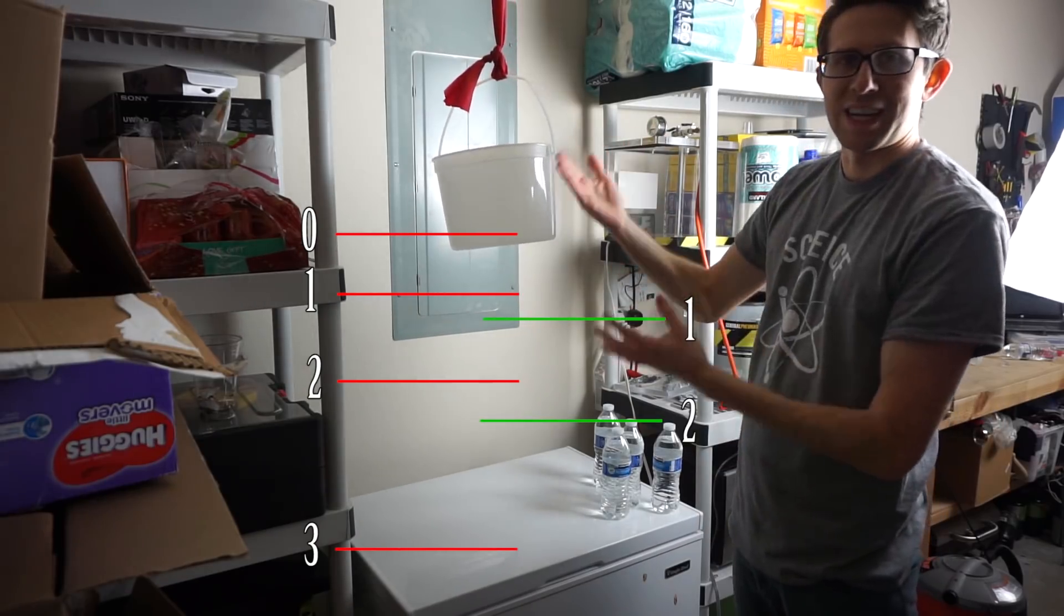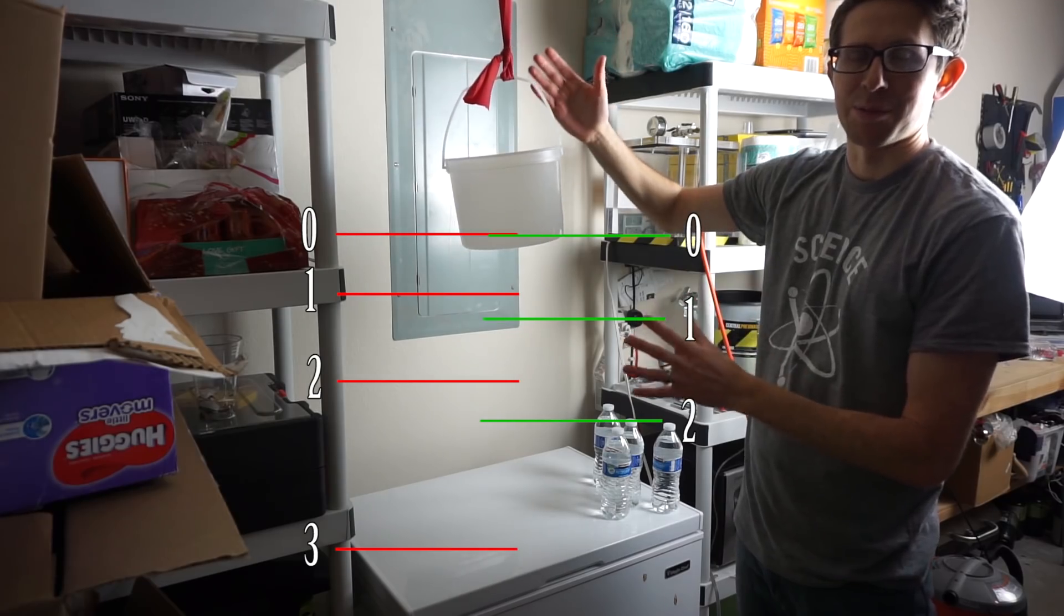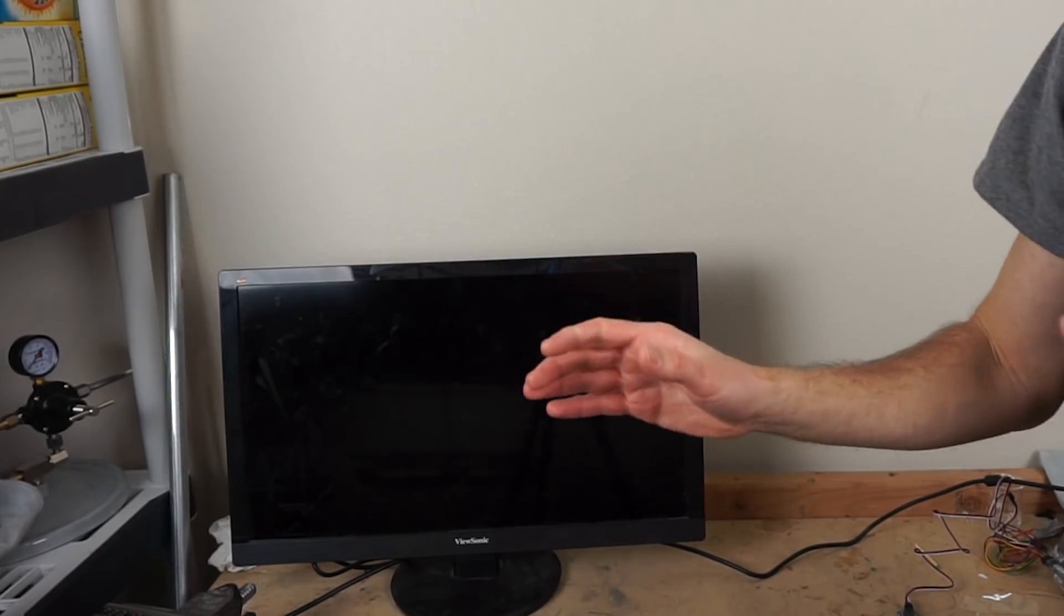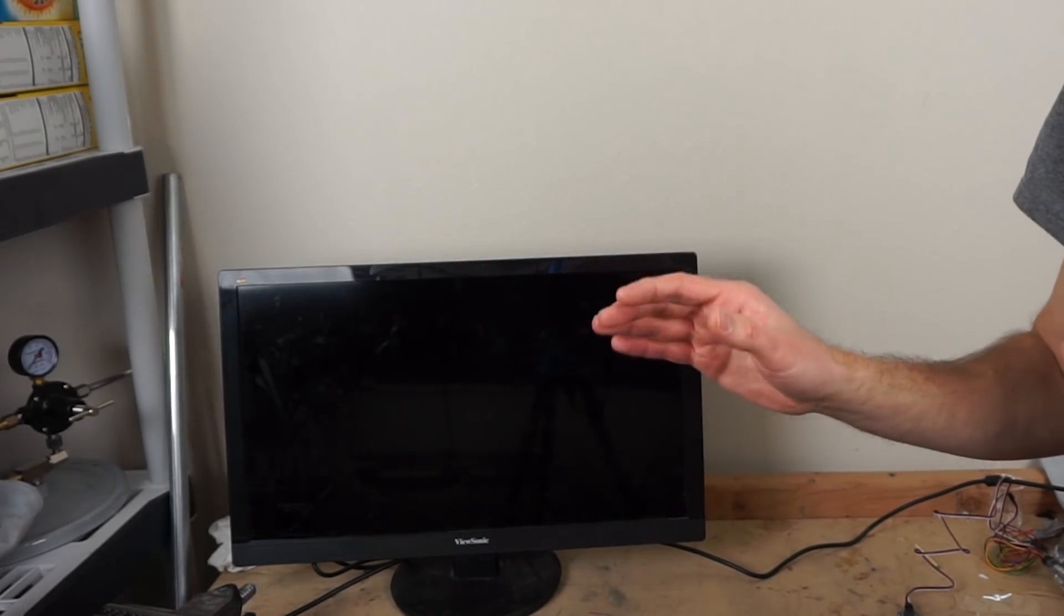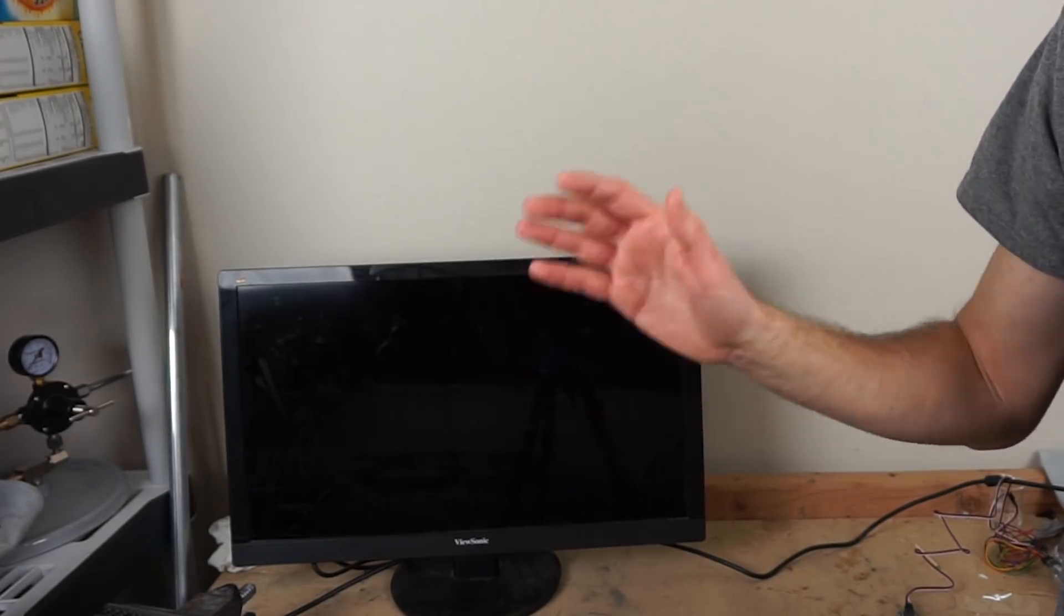So this is called elastic hysteresis. And what that means is the material has a memory of what happened before. So in terms of energy, more energy was required during the loading than the unloading. And this excess energy is dissipated as heat.